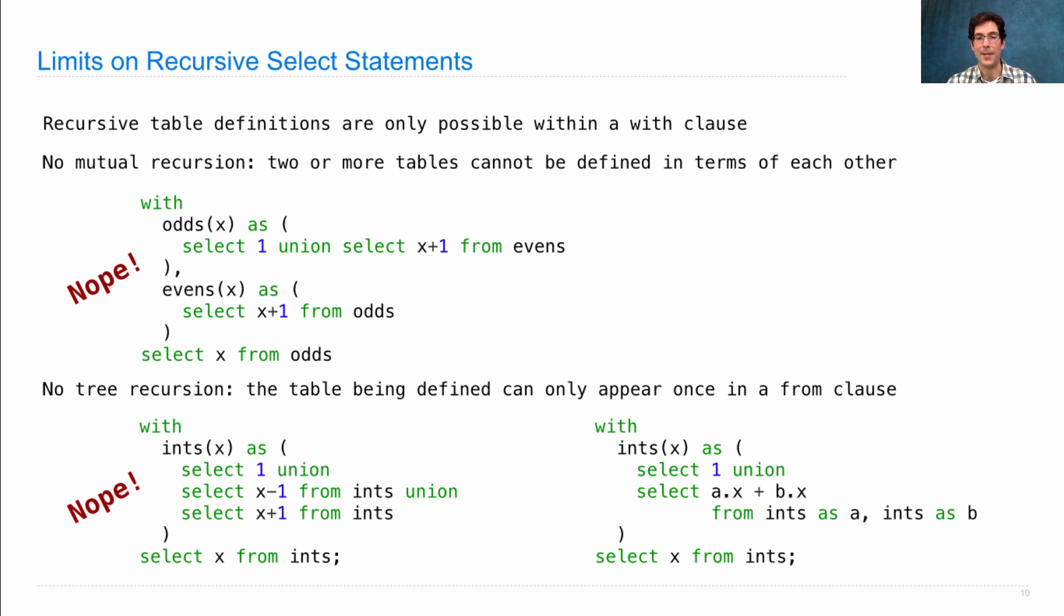This is not allowed because ints appears twice in two different from clauses. You also can't join ints together with ints. So you might want to do an example that says something like select 1, union select ax plus bx, where ints is joined with ints and given the aliases a and b. That's not allowed either. So there are some limitations to the kinds of recursion you can use. Basically, you get one recursive statement, where you can only include the table that you're recursing on one time.